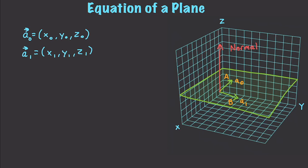From this, we can get that vector by subtracting A naught from A1. So this is going to be A1 minus A naught, which is equal to, and we can go and get our new vector by saying, X1 minus X naught, Y1 minus Y naught, and Z1 minus Z naught. And since this vector is perpendicular to the normal vector, then the dot product of our normal and A1 minus A naught are going to be equal to zero.